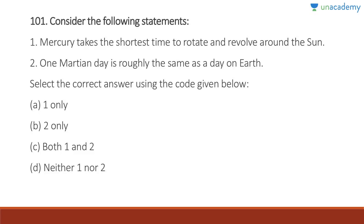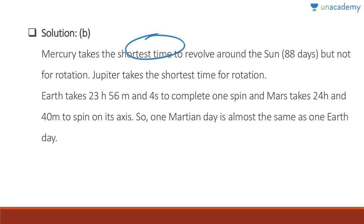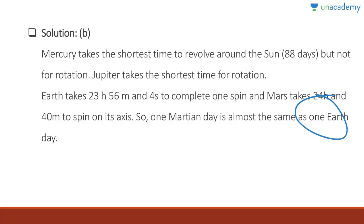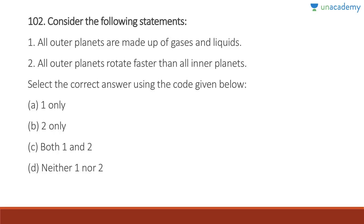One Martian day is roughly the same as a day on Earth, so this is correct. The answer is B — two only. Mercury takes the shortest time to revolve around the sun (88 days) but not for rotation. Jupiter takes the shortest time for rotation. Earth takes 23 hours 56 minutes 4 seconds to complete one spin, and Mars takes 24 hours and 40 minutes to spin on its axis, so one Martian day is almost the same as one Earth day.